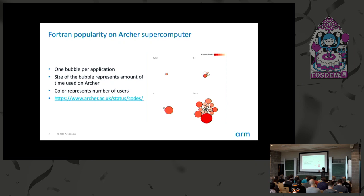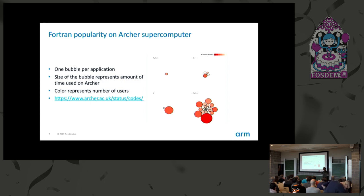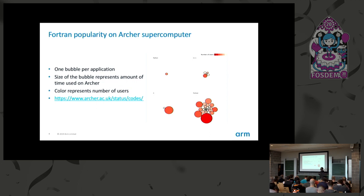To illustrate Fortran's popularity: in the UK, a supercomputer called Archer publishes statistics on what applications run on it. A graph showing applications by language — C++, Python, C, and Fortran — uses bubble size to represent time spent on the supercomputer and darkness to represent the number of users. You can see that more than 60% of applications running on that supercomputer continue to be Fortran, showing how important it is to have a Fortran compiler that generates high-performance code.